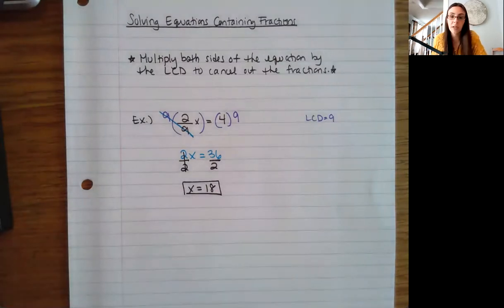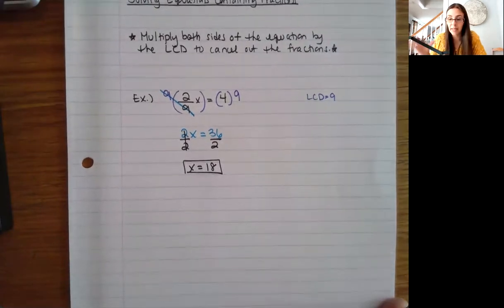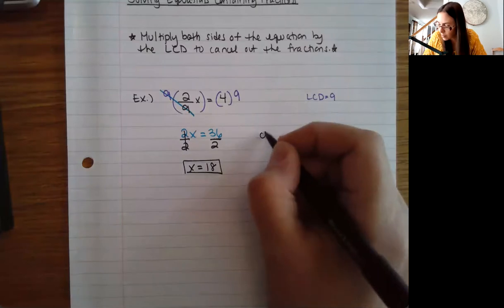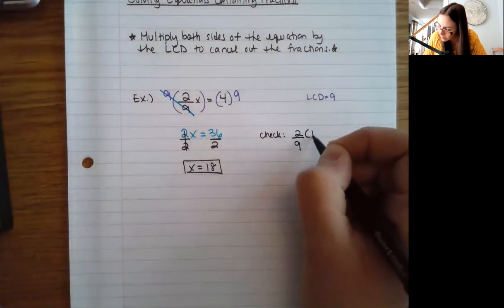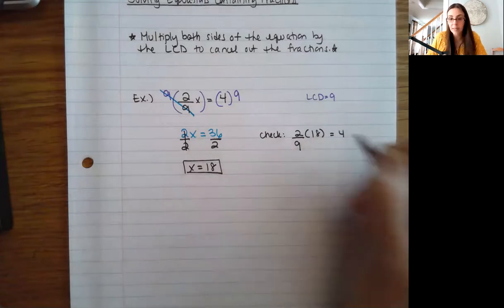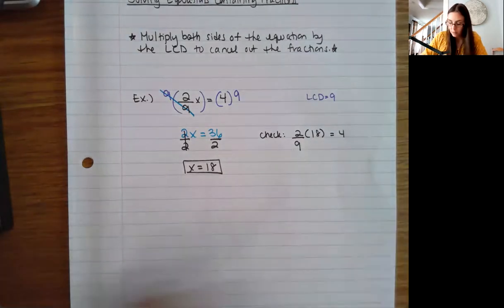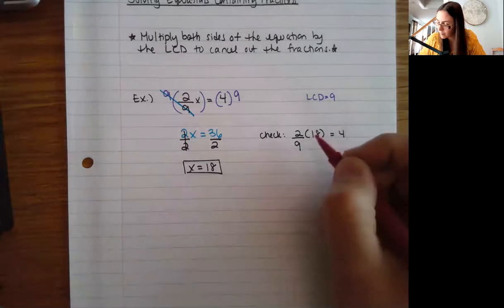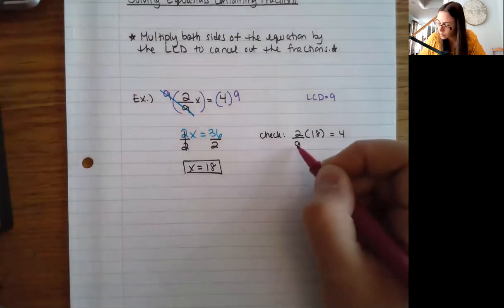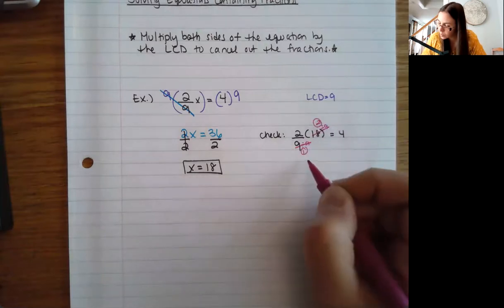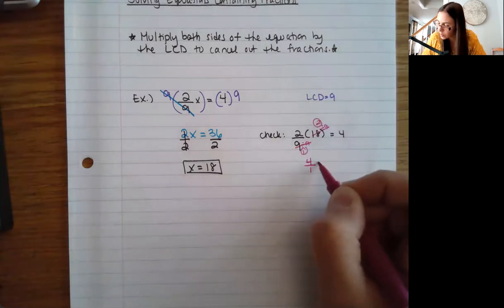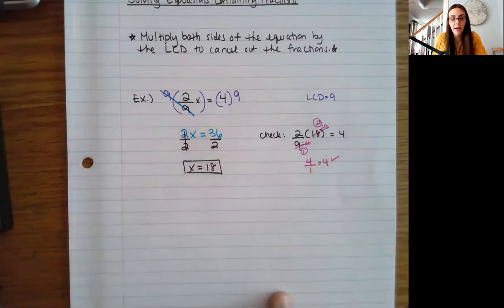You can still go back and check your answers by returning to the original equation and plugging that value in to make sure it's still true. If you notice, six divided by nine times (2/9) times 18: I can simplify — six divided by nine gives two times two is four over one, which is definitely four. So it does check out.